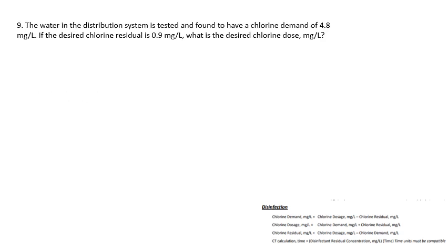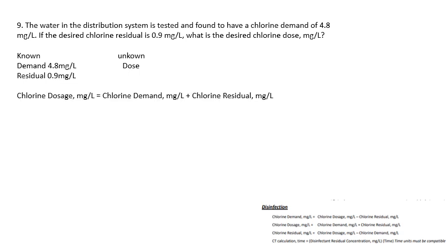Question number nine: the water in the distribution system is tested and found to have a chlorine demand of 4.8 mg/L. If the desired chlorine residual is 0.9 mg/L, what is the desired chlorine dose? The demand is 4.8 mg/L and the desired residual is 0.9 mg/L. Using the dosage formula — chlorine demand plus chlorine residual — 4.8 plus 0.9 gives a dosage of 5.7 mg/L.